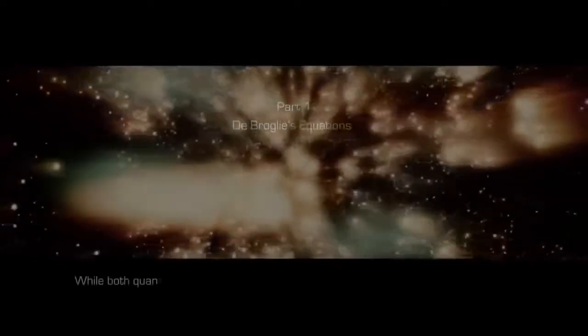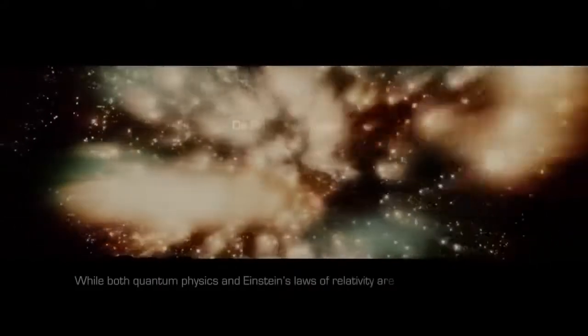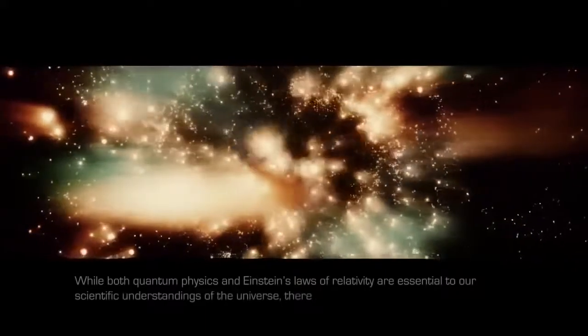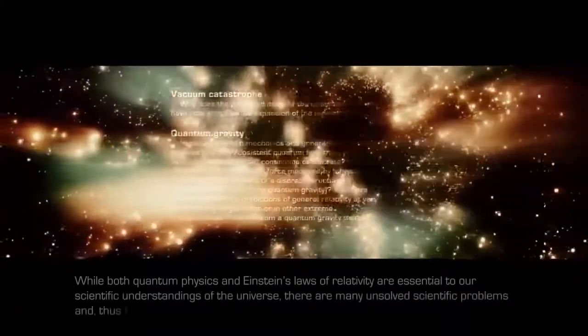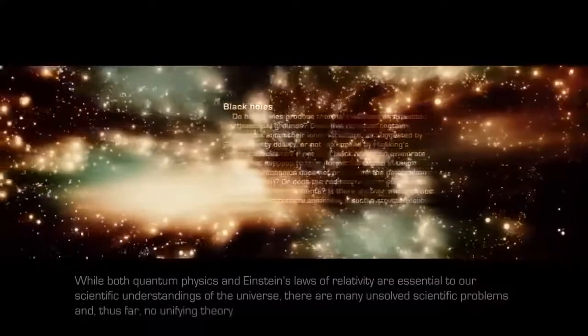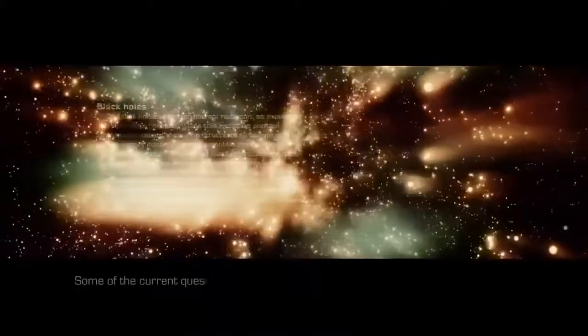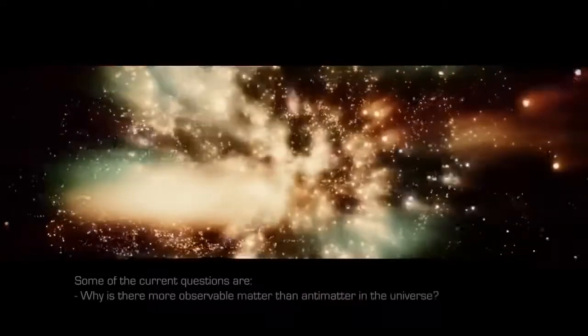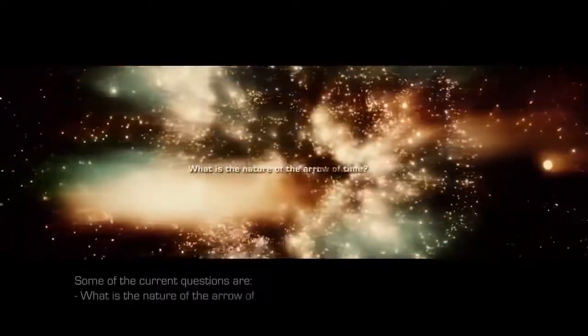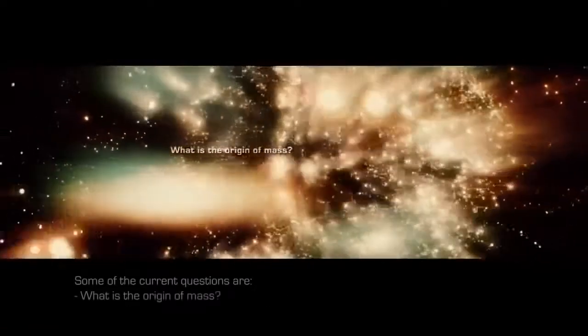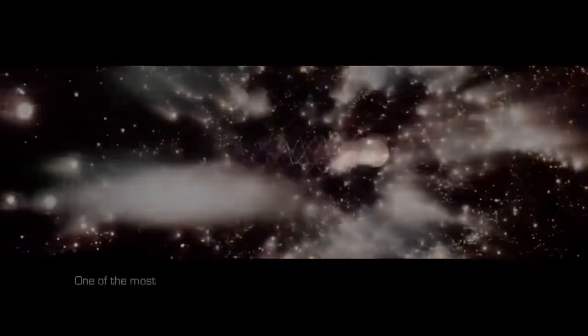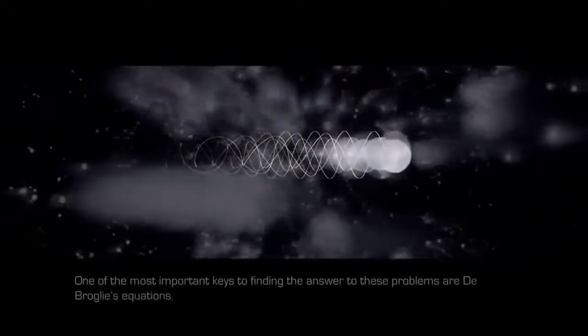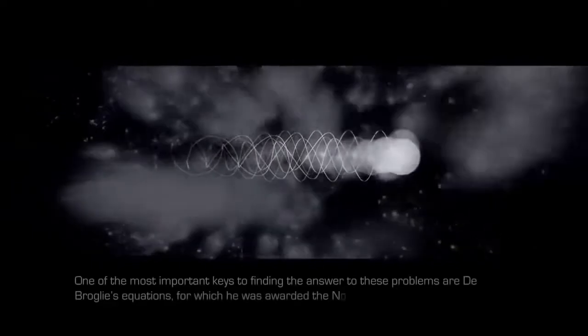While both quantum physics and Einstein's laws of relativity are essential to our scientific understandings of the universe, there are many unsolved scientific problems, and thus far no unifying theory. Some of the current questions are: why is there more observable matter than antimatter in the universe? What is the nature of the arrow of time? What is the origin of mass? One of the most important keys to finding the answer to these problems are de Broglie's equations, for which he was awarded the Nobel Prize in Physics.